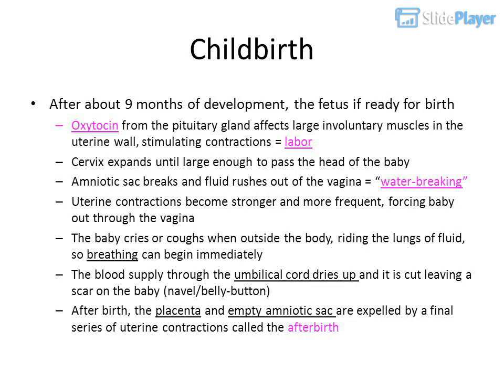After about nine months of development, the fetus is ready for birth. Oxytocin from the pituitary gland affects large involuntary muscles in the uterine wall, stimulating contractions — this is called labor. The cervix expands until large enough to pass the head of the baby. The amniotic sac breaks and fluid rushes out of the vagina, known as water breaking. Uterine contractions become stronger and more frequent, forcing the baby out through the vagina.